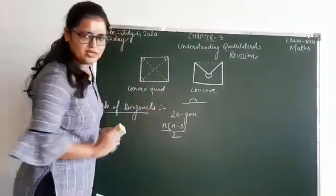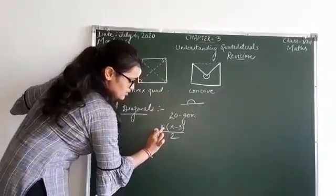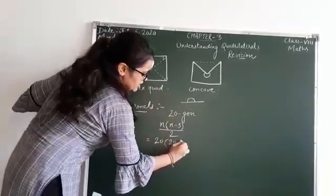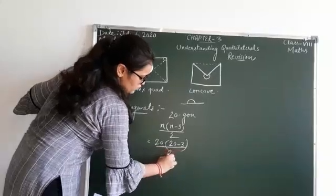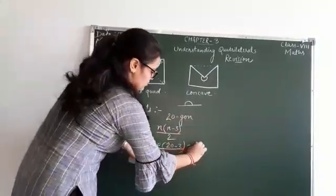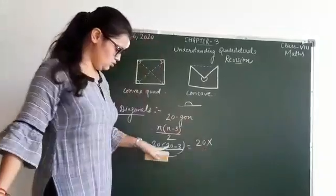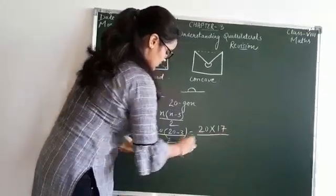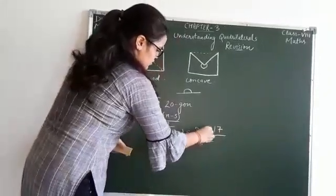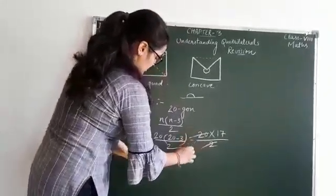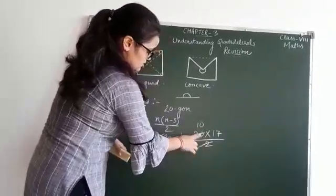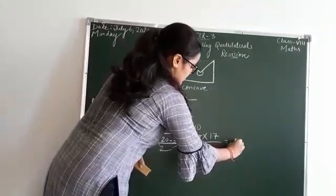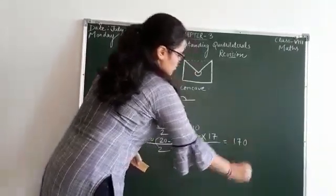My polygon has 20 sides, that means n will become 20. So we calculate: 20 × (20 − 3) / 2. This becomes 20 × 17 / 2. Now 2 and 20 cancel out, giving us 10. So it becomes 10 × 17.